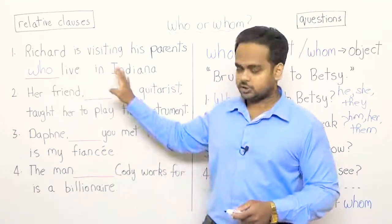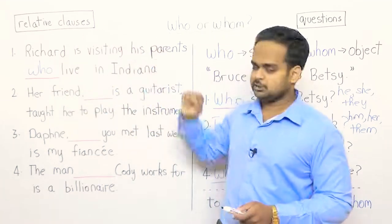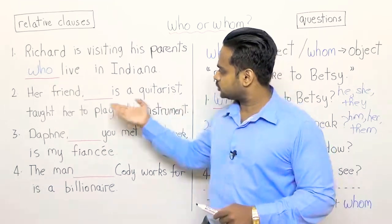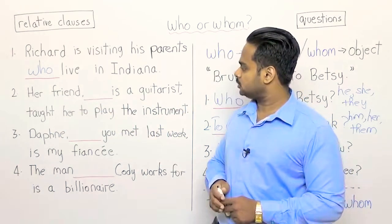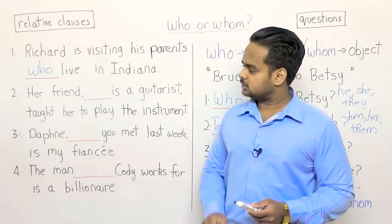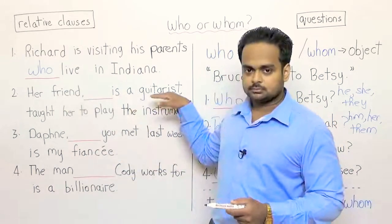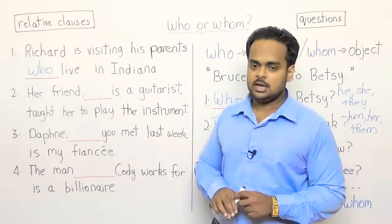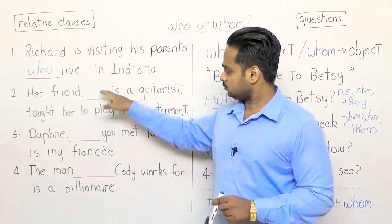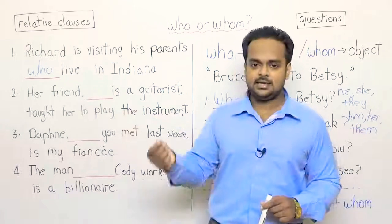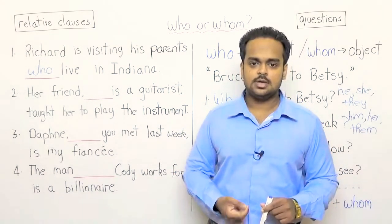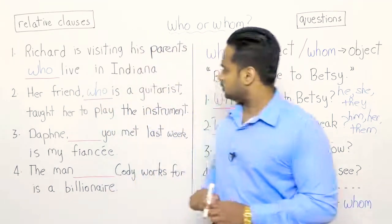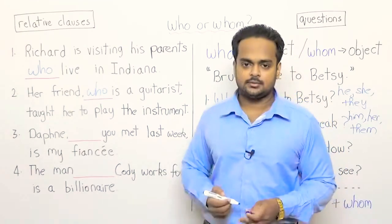In the second sentence: her friend blank is a guitarist taught her how to play the instrument. The two sentences are: her friend is a guitarist, and her friend taught her to play the instrument. In this gap, can you say he is a guitarist or him is a guitarist? He is a guitarist is correct, so her friend who is a guitarist taught her to play the instrument.